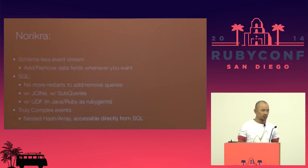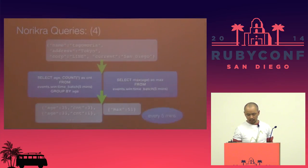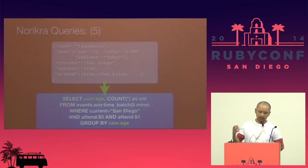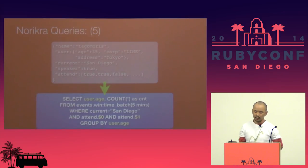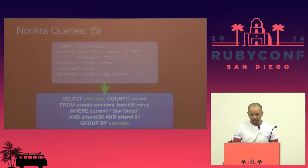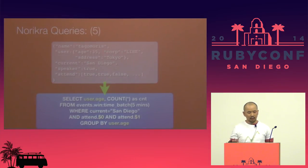Norikra can handle nested hashes and arrays, and these values are accessible directly from SQL. For example, if user attributes have a nested JSON object and 'attend' is a nested JSON array, Norikra's query is extended so we can access user.age or attend or any other nested specifications.